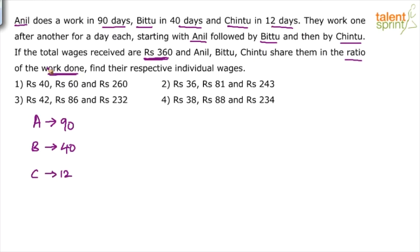Total amount paid for doing this work is 360 and the total amount has to be distributed among these three guys in the ratio of the work done. Out of the total work, there's some fraction of work that Anil would do, then there's some fraction that Bittu does and the leftover work is done by Chintu. Based on the amount of work done by each one of them, we have to divide the wages.